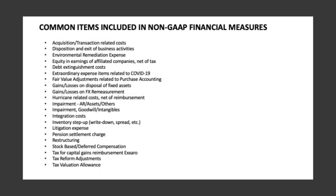Section 9: Common items included in non-GAAP financial measures — acquisition transaction-related costs; disposition and exit of business activities; environmental remediation expense; equity and earnings of affiliated companies, net of tax; debt extinguishment costs; extraordinary expense items related to COVID-19; fair value adjustments related to purchase accounting; gains and losses on disposal of fixed assets; gains and losses on FX remeasurement; hurricane-related costs, net of reimbursement; impairment of AR, assets, or others; impairment of goodwill or intangibles; integration costs; inventory step-up, write-down, or spread; litigation expense; pension settlement charge; restructuring; stock-based or deferred compensation; tax for capital gains reimbursement; tax reform adjustments; and tax valuation allowance.